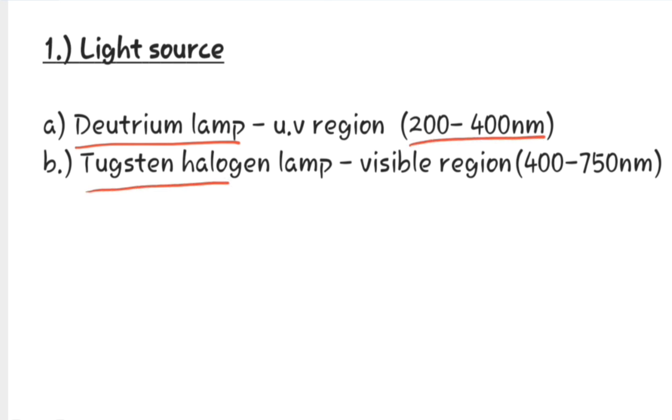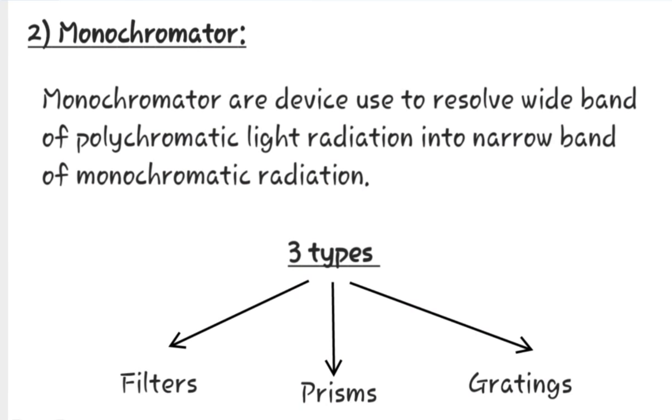And the second is tungsten halogen lamp, which is used for the visible region radiation having the range of 400 to 750 nanometers. Now let us see about monochromator.